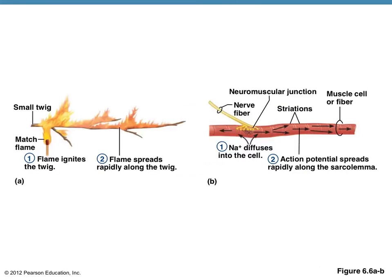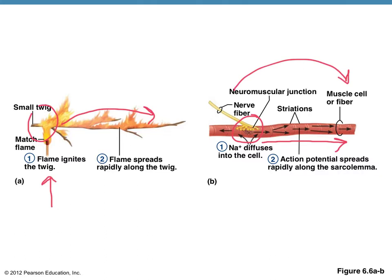This slide gives the analogy of igniting a twig on fire in a specific location and then that flame spreading along the twig physically from point A to point B. The same thing happens as sodium diffuses into a muscle fiber — the action potential is generated here, and then it rapidly spreads. It doesn't jump; it physically spreads rapidly along the surface or the cell membrane of the muscle fiber.